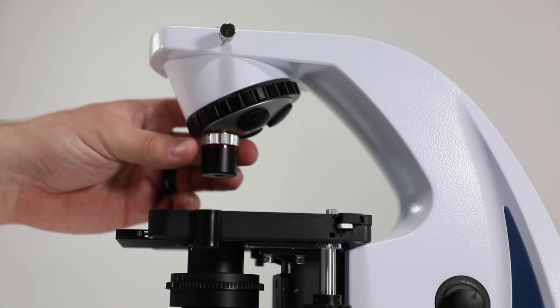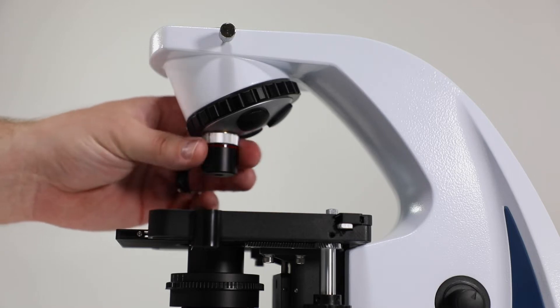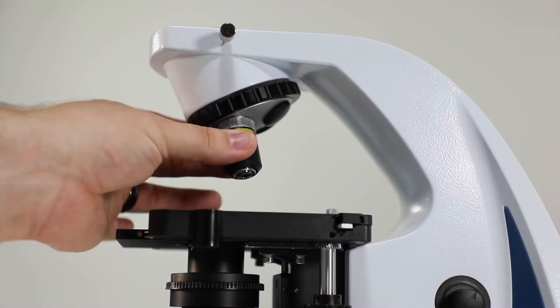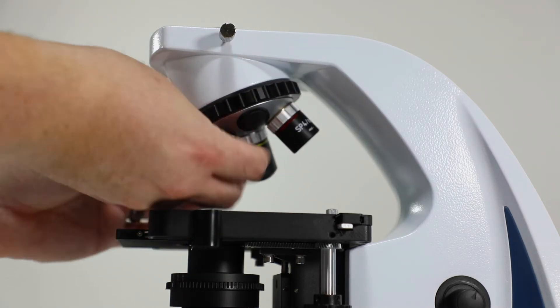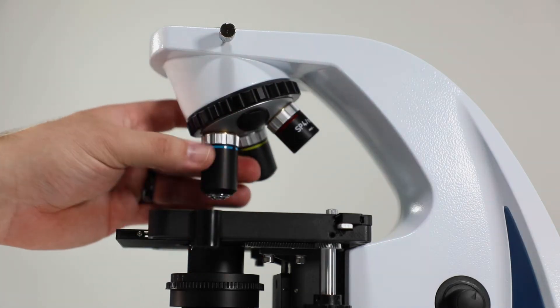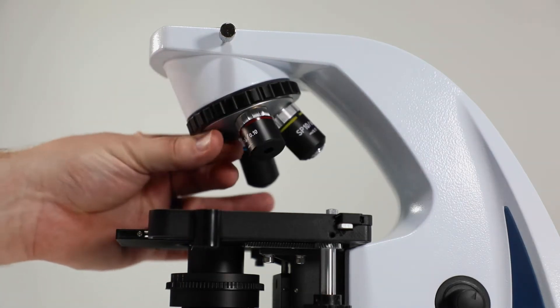Remove one of the protective caps from the nose piece and screw in your 4x objective until it's snug. Repeat the process with the 10x, 40x, and 100x objectives until all four objectives are installed.